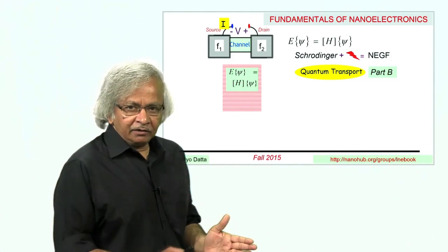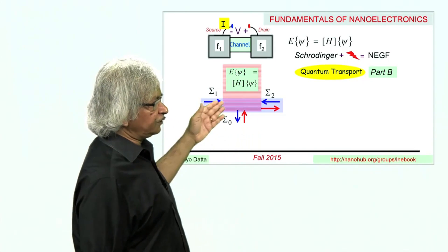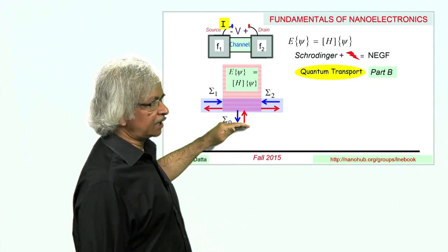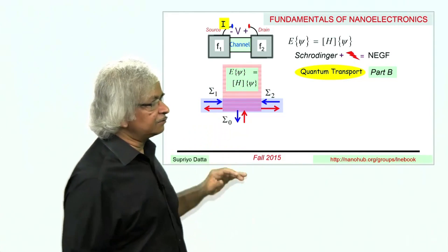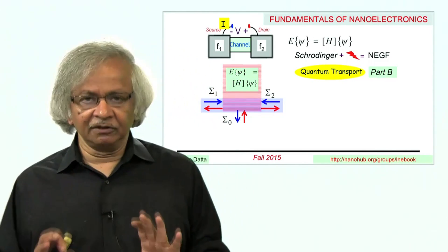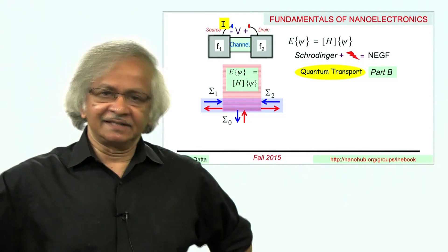In Unit 2, we'll discuss the flow of electrons into and out of the contacts, the interaction with the surroundings, and develop the NEGF equations. Then we'll look at different examples.